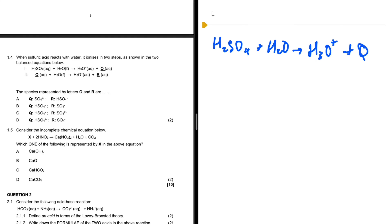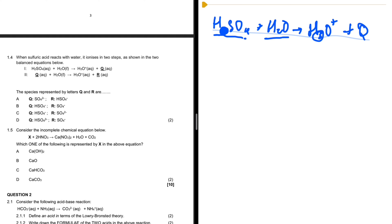In a reaction, what is on the left must also be on the right. On the left we have H₂SO₄ and H₂O; on the right we have H₃O⁺, meaning H₂O has received one proton from H₂SO₄. Removing one hydrogen from H₂SO₄ leaves us with HSO₄⁻, giving us our Q.